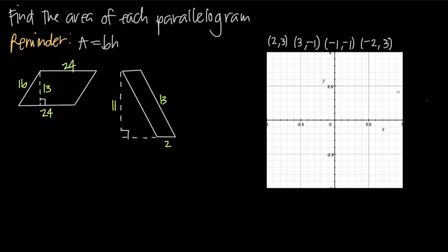What about the height? We have to be careful, because the height we're interested in is not the slant height. The slanted side has a length of 16, and the opposite side is also 16 since opposite sides are congruent. But we're not interested in the slant height — we're interested in the vertical height through the center, which is 13. So the area equals 24 times 13, which gives us 312 square units.